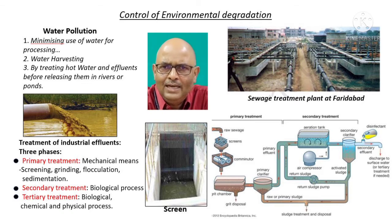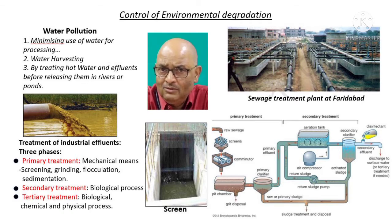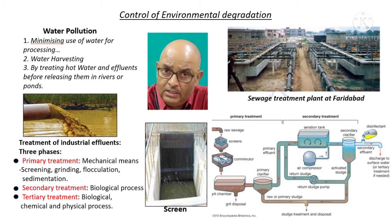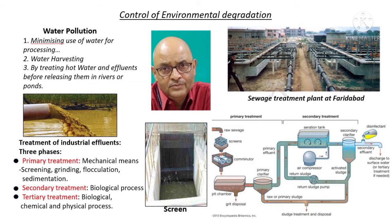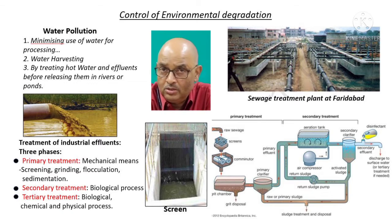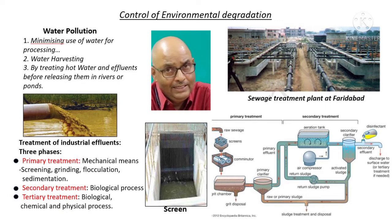To understand this phenomenon, think about what happens when alum - also called potash alum or fitkiri in Hindi - is added to muddy water. It forms a precipitate and impurities get deposited at the bottom, giving you clean water. So this is the primary treatment in simple terms.